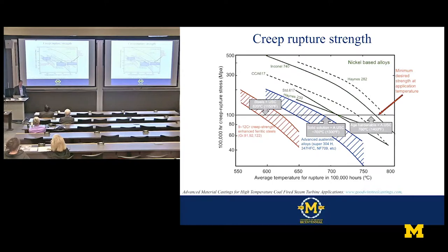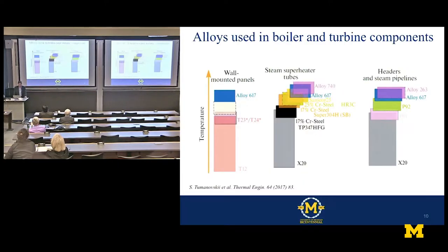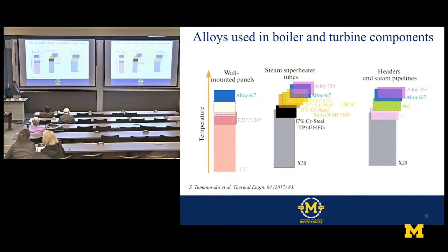One of the most important properties is the creep rupture strength of these very high-temperature materials. This plot shows the 100,000-hour creep rupture stress as a function of temperature. Above 700°C, the only alloys that meet the minimum desired strength are nickel-based alloys such as Alloy 617, Inconel 740, and Haynes 282. So the drive has been to these very high-temperature, very strong alloys as we push for more and more efficiency. As you go up the temperature scale, you leave ferritics behind, going through austenitics to nickel-based alloys.